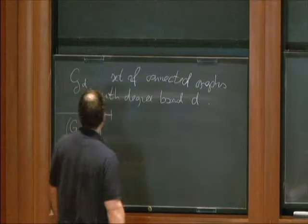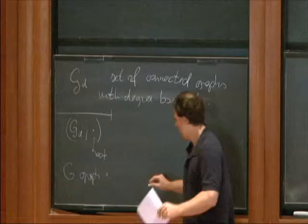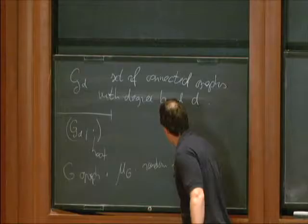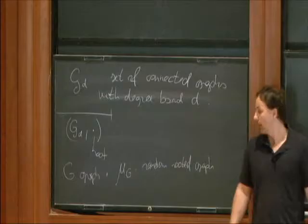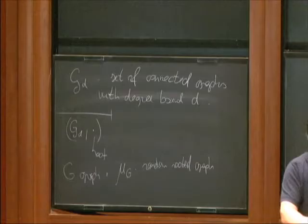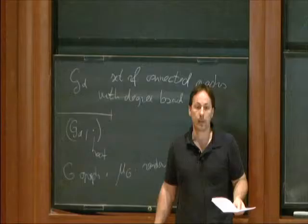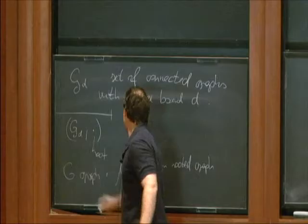Let's be a bit more formal. If you have an unrooted graph, I introduce a measure μ_G — that's a random rooted graph. You get the random rooted graph from this finite graph by uniformly randomly assigning the root. So you can turn one nice graph into a probability measure on G_D-root, this compact space. Benjamini-Schramm convergence is simply weak convergence in this universe — on G_D-root.